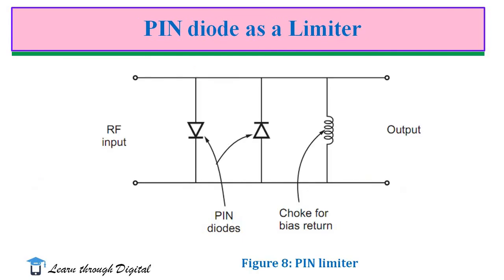Another application is the PIN diode as a limiter. A PIN limiter is a microwave switch that is controlled by self-bias rather than external bias. PIN diodes are used in shunt to limit power. The choke provides a return path for the self-biased circuit. The power handling capability can be increased further by using more diodes in shunt. PIN limiters can withstand maximum power up to 100 kilowatts and are also used for protection of microwave systems.